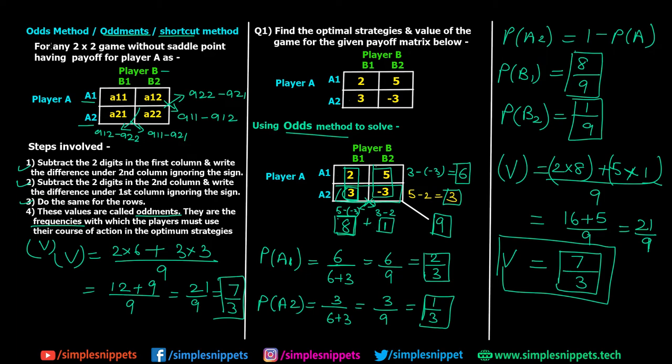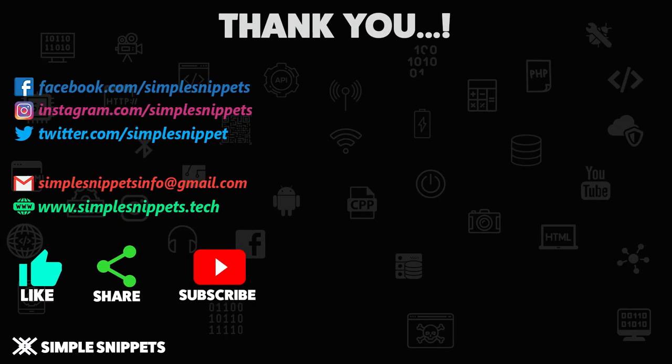So this was the odds method, which can be used for any two-by-two game without a saddle point. I find it much easier compared to the algebraic method where you had to remember specific formulas — though that method is also straightforward if you can recall them. That's it for this video — I hope you liked it. Please give it a thumbs up, share it with your friends, and subscribe so you get notified when I upload. Thanks for watching, see you in the next video. Peace!